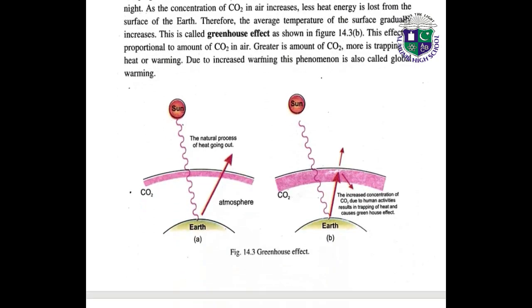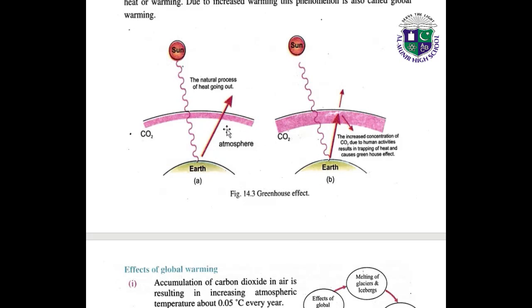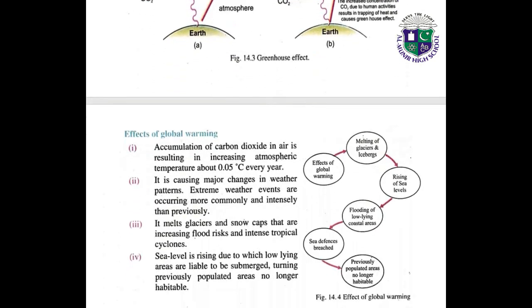This picture shows the greenhouse effect. Here we have the atmosphere and the carbon dioxide layer. This layer shows the carbon dioxide. The natural process of heating is going on, and heat is trapped in our atmosphere.